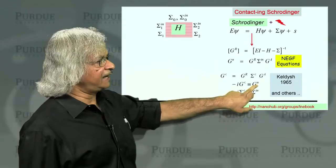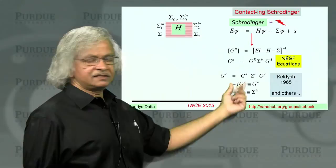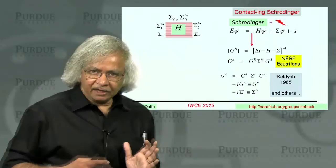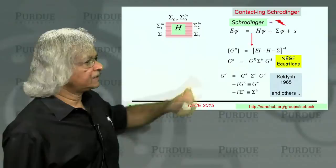In the usual literature, you have a g less. Whereas I have defined a gn, which is more like electron density. And it's minus i times g less. Similarly, there's a sigma less. But I've defined a sigma n, which is more like inflow. But otherwise, it's basically the same equation.